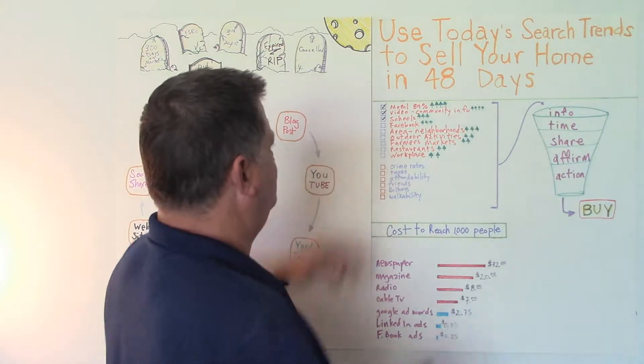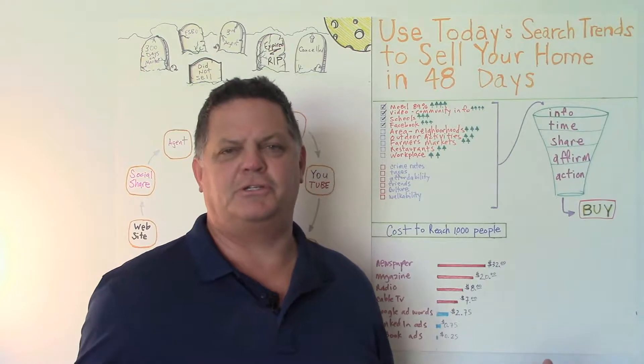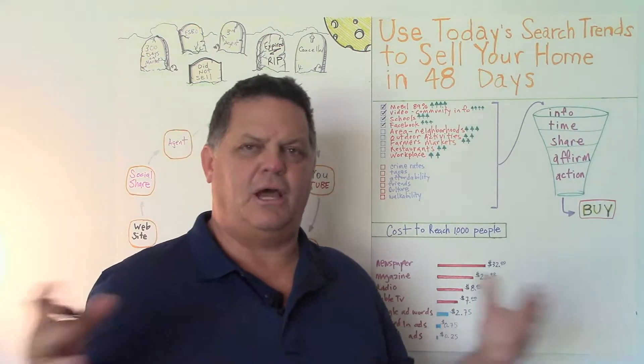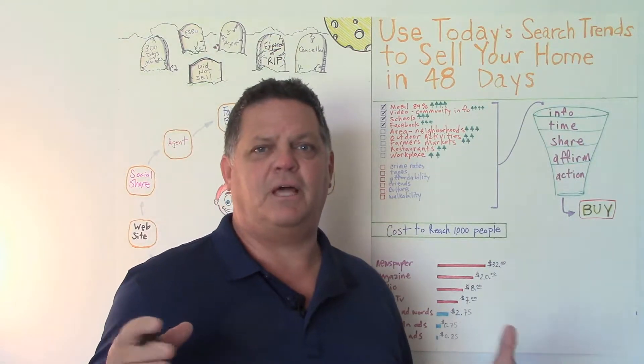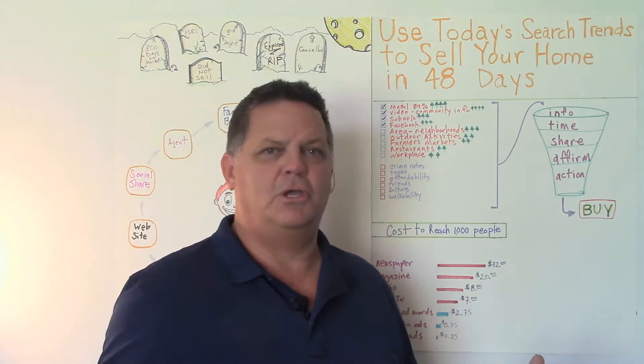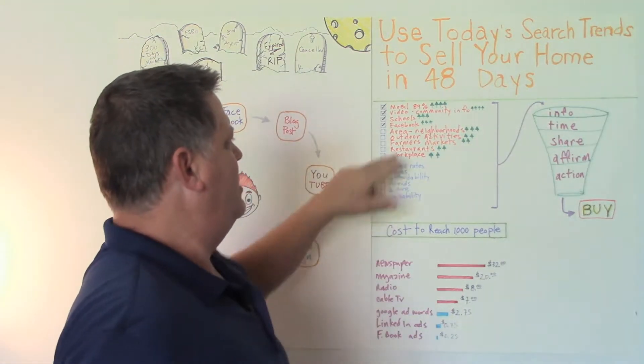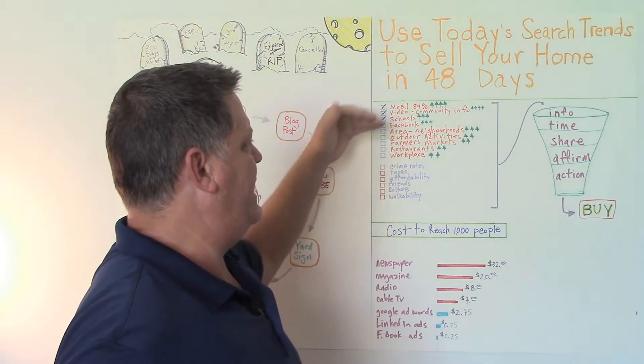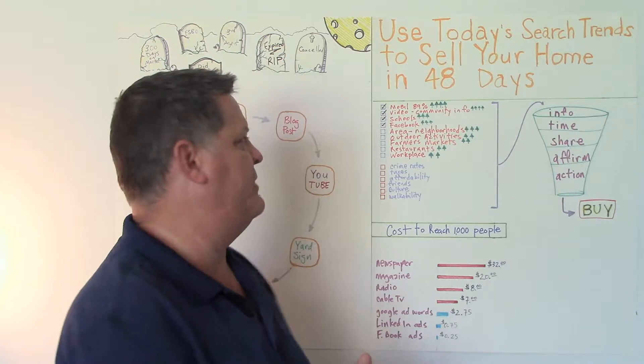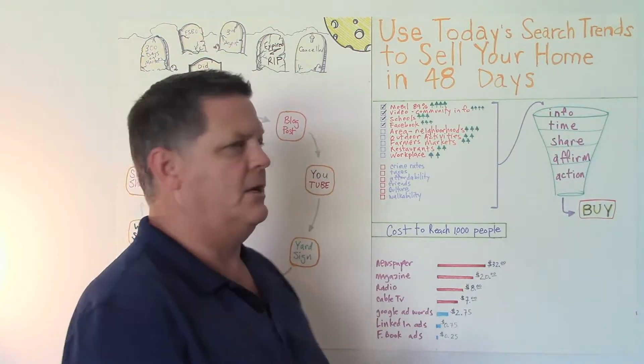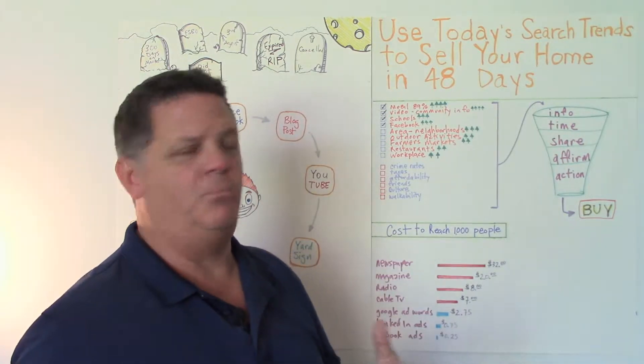Next thing is Facebook. Facebook is the fifth largest search engine on the web. So it's a search engine a lot like Google. People will search topics on Facebook. So we don't want to leave Facebook out. And we want to really cater to that and make sure that we're posting content on Facebook about your home and boosting that content, paying in order for people to be able to see it more frequently.